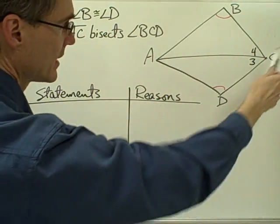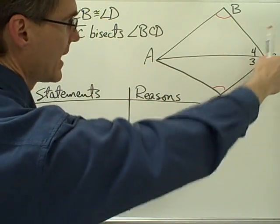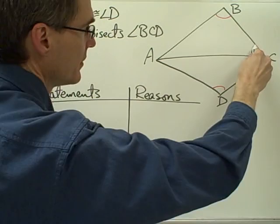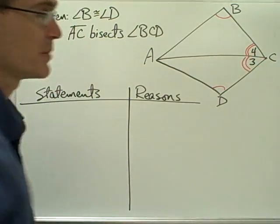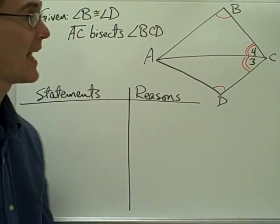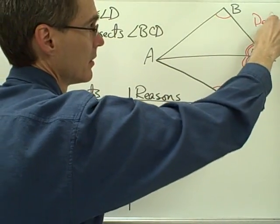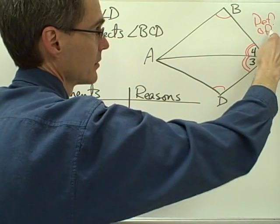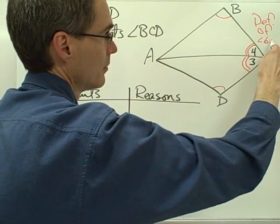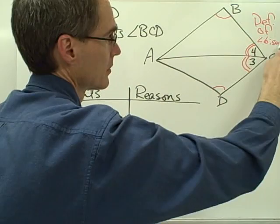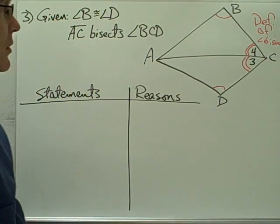If AC bisects this angle, that means this angle and this angle must be congruent, because that's the definition of angle bisector. So the definition of angle bisector tells me that those two angles are going to be congruent.